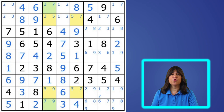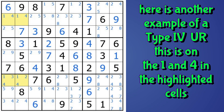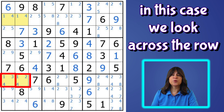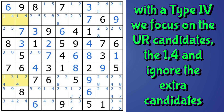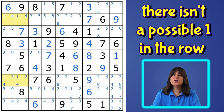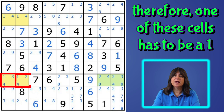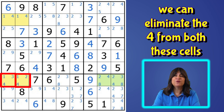Let's take a look at one more type four unique rectangle. Here we have a UR made up of the one and four, again in two rows, two columns, and two blocks. But here we have the additional candidates in two non-diagonal cells in the same row. In the previous example it was in the same column, so here we're going to look across the row instead. With a type four UR, we focus on the UR candidates — the one and the four — and ignore the extra candidates. Looking across the row, we see there isn't a possible one in the row. There are two possible fours, but no ones. So one of these cells has to be a one, and the other can't be a four, or we would have an impossible or deadly pattern. So we can eliminate the four from both of these cells.